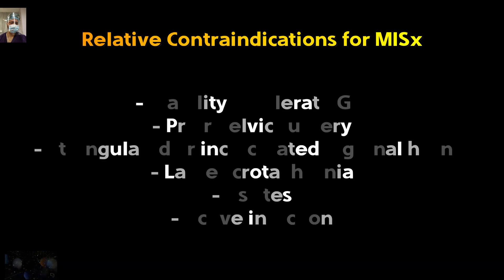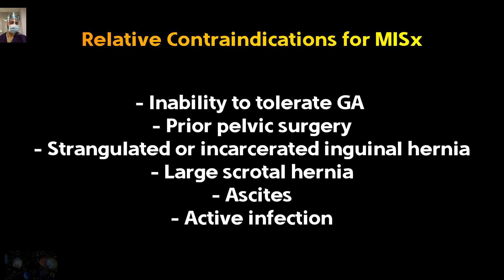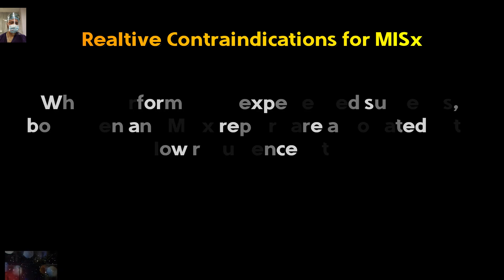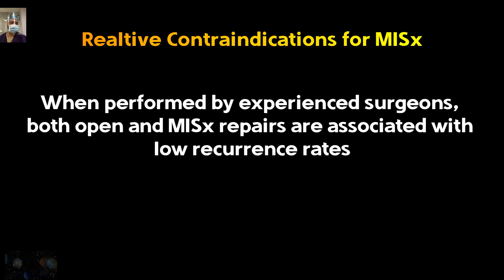In the present era of minimally invasive surgery — and I am not against it, as it has its own advantages — there are relative or absolute contraindications for laparoscopic repair. These include patients unfit for general anesthesia such as COPD patients with high risk of CO2 buildup, prior pelvic surgery or laparotomy preventing safe laparoscopic access, strangulated or incarcerated hernia at presentation, femoral hernias difficult to manipulate laparoscopically, and the presence of ascites or active infection. When performed by an experienced surgeon, both open and minimally invasive surgery have low recurrence rates, though MIS offers earlier ambulation and less pain.